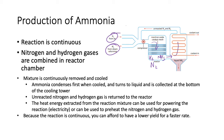In the condenser tower, the gases are piped in at the bottom and rise up. As they rise, they cool down and transfer heat energy to the coolant — so the coolant comes in cold and exits hot. The NH3 condenses first when cooled, turning into a liquid and being collected at the bottom of the cooling tower.